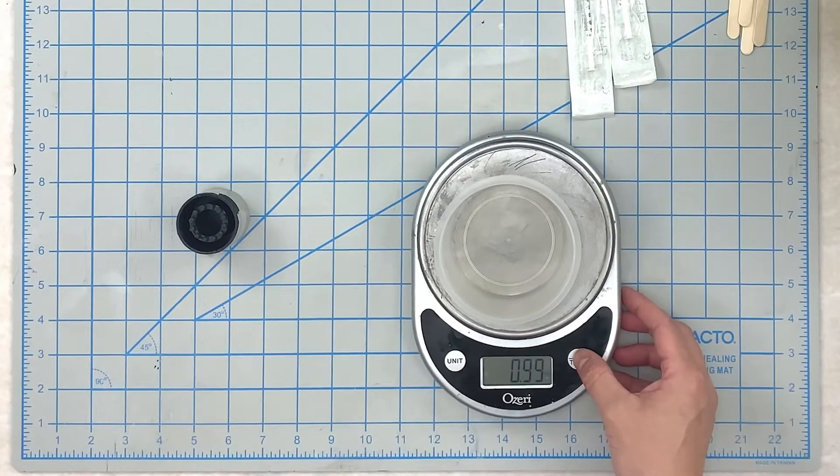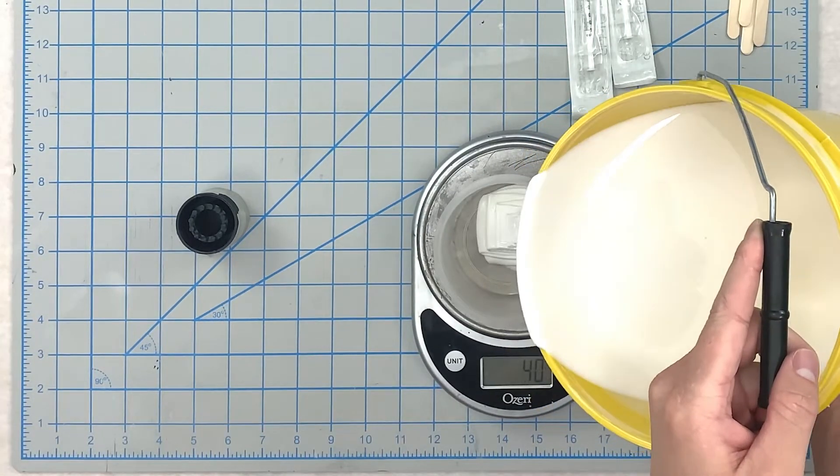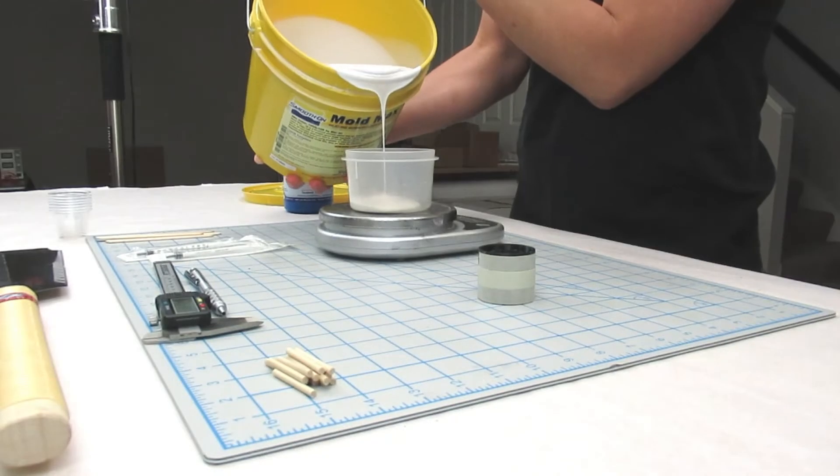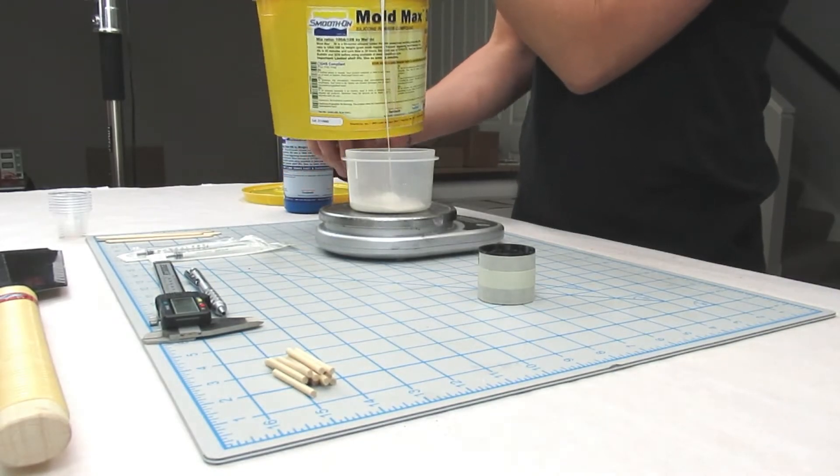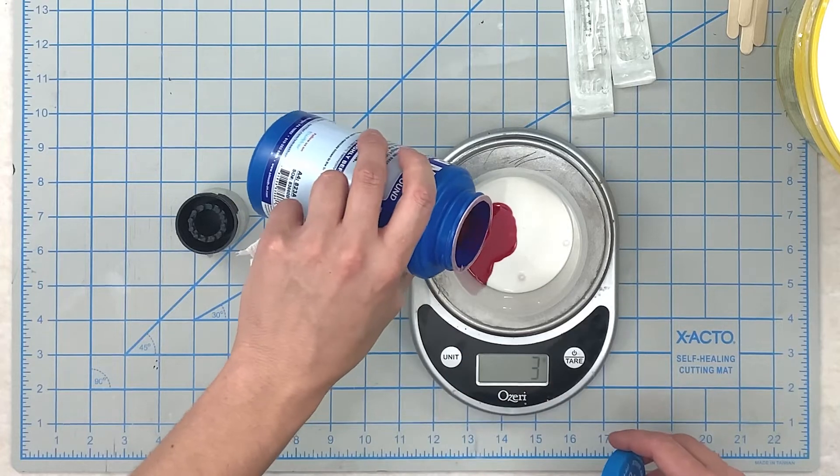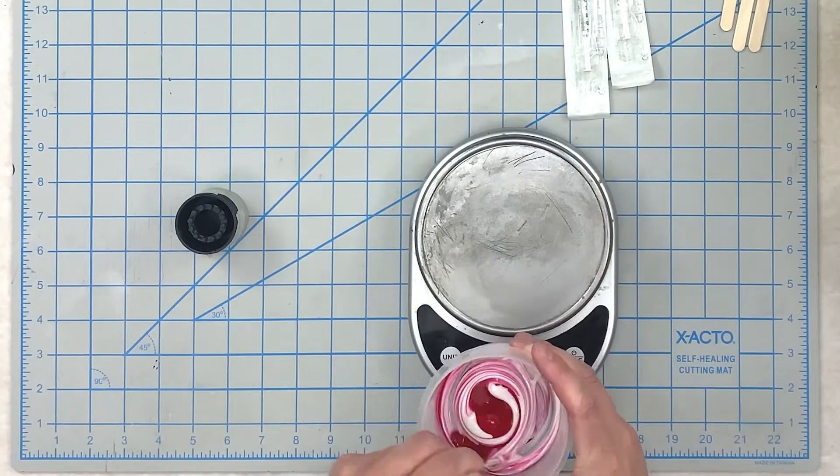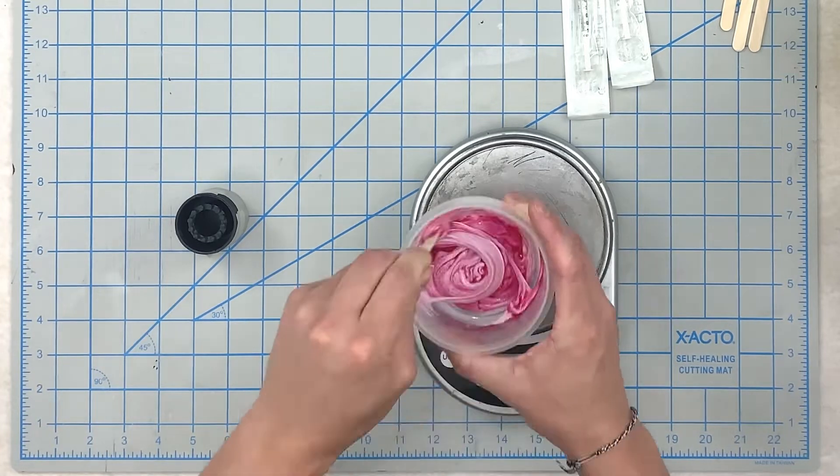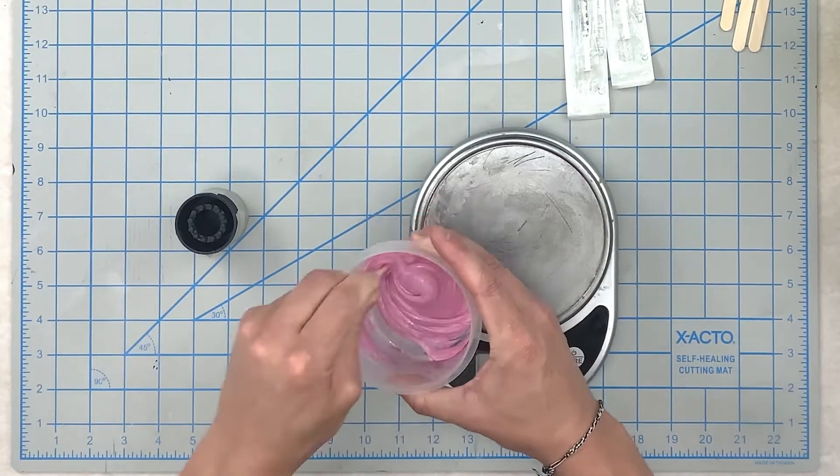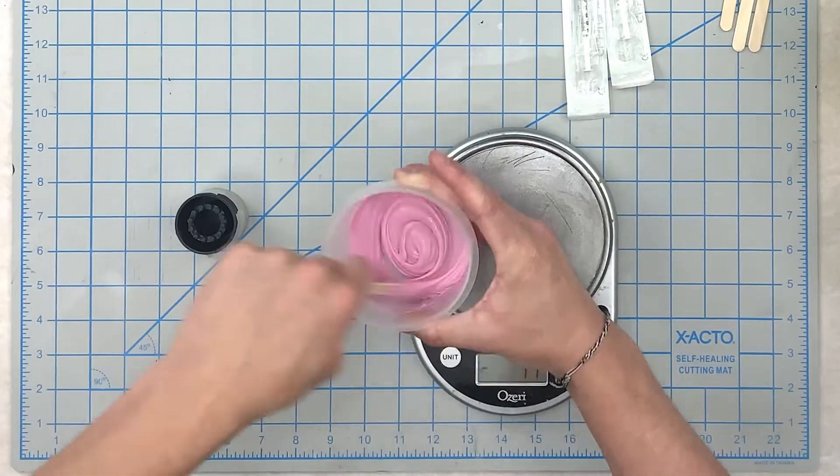Here I am pouring the silicone. It is a 10 to 1 mixture. I make sure to stir it up really good and then I will put it in the pressure pot to get rid of most of the bubbles.